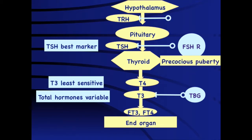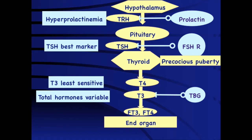The other important crosstalk is that TRH (thyrotropin releasing hormone) is also a stimulatory hormone for prolactin. Uncontrolled primary hypothyroidism is associated with increased hypothalamic release of TRH, which can subsequently result in hyperprolactinemia. Therefore, thyroid function assessment is absolutely important in girls who have ovarian cysts, precocious puberty, or those who present with hyperprolactinemia or galactorrhea.